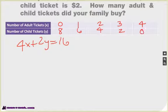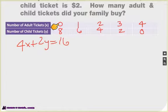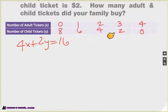So these are our points. Now we're going to plot these on a graph. This becomes (0, 8) is our first point, (1, 6) is our second, (2, 4) is our third, (3, 2), and (4, 0). This represents 0 adult tickets and 8 child tickets, 1 adult and 6 kids, 2 adults and 4 kids, 3 adults and 2 kids, and 4 adults with no kids. So let's put this on a graph.